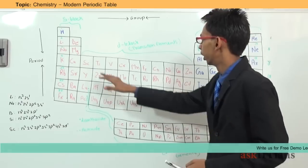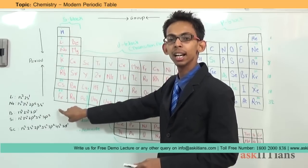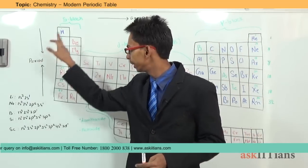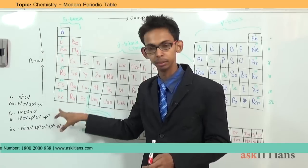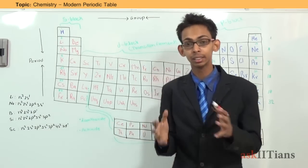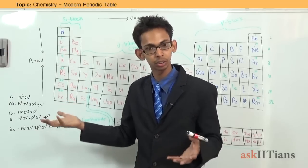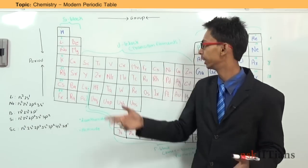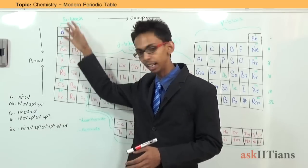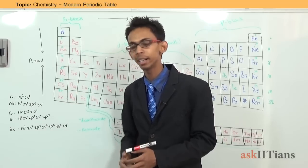The elements of the first group are known as alkali metals. Why? Because the hydroxides of these elements are strong alkalis. For example, sodium hydroxide is a strong base, potassium hydroxide is another strong alkali, and so is lithium hydroxide. Since all hydroxides of the first group elements are strong alkalis, these elements are called alkali metals.